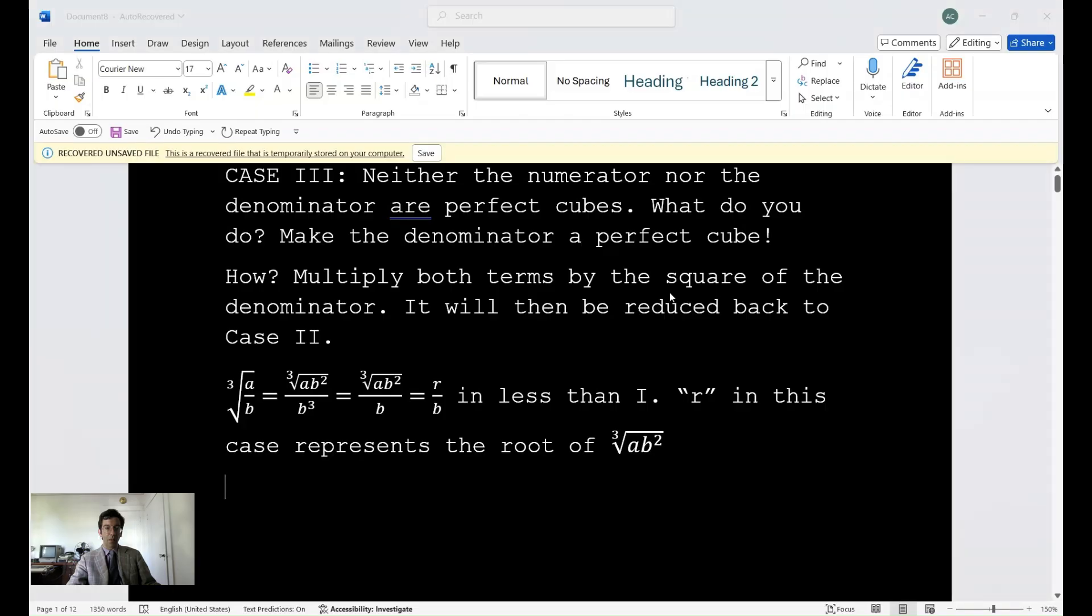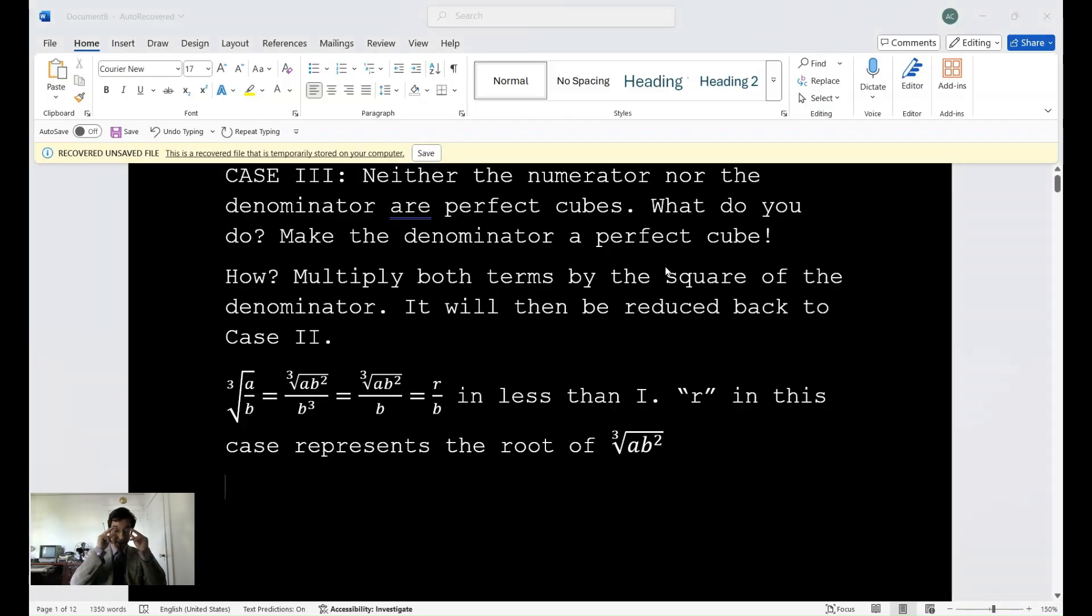Now the third case: when neither the numerator nor the denominator are perfect cubes. What do you do? You make the denominator a perfect cube. It's a form of rationalizing the denominator. I know some schools still teach this, but not as deep as they should. I had an honor student yesterday who does very well on his PSAT—he has no idea how to rationalize denominators properly. It's sad. He had the highest PSAT score in his class.